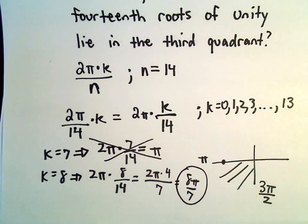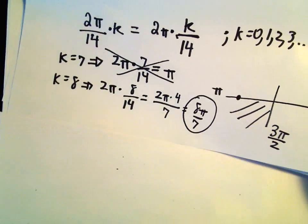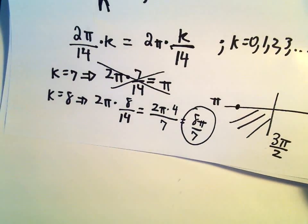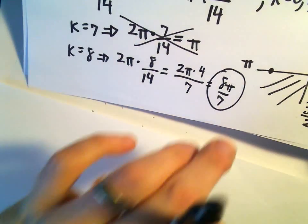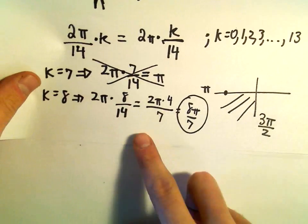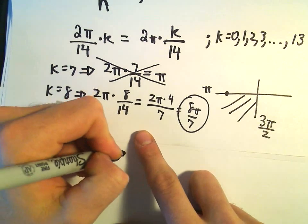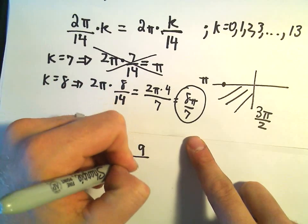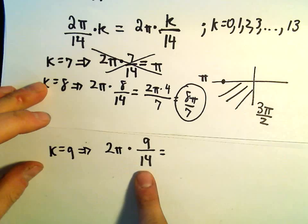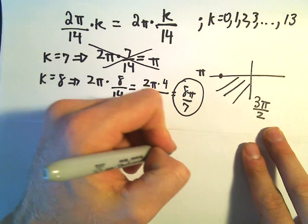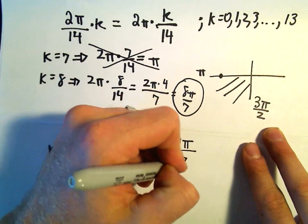And now I'm just going to keep sort of brute force checking them until we get an angle larger than 3π over 2. So let's see here. We checked k equals 8. Let's do k equals 9. So if we do k equals 9, we'll get 2π times 9 over 14. If we simplify that, 2 over 14 gives us just 1 seventh. So we'll be left with 9π over 7.